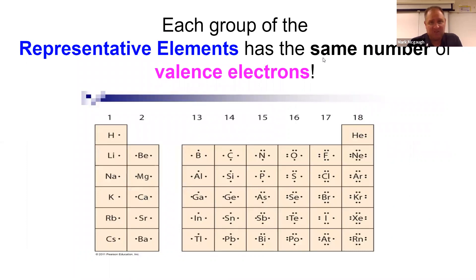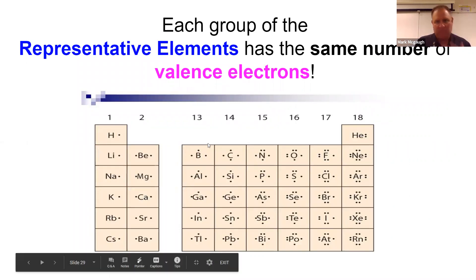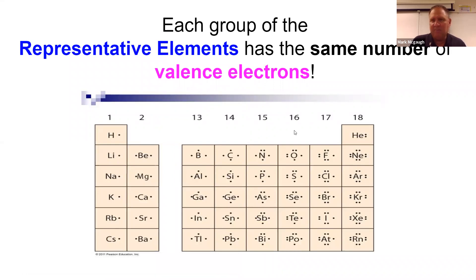In this each group of the representative elements, remember we're skipping the transition metals in this class, they all are in the same family, they're all in the same group.